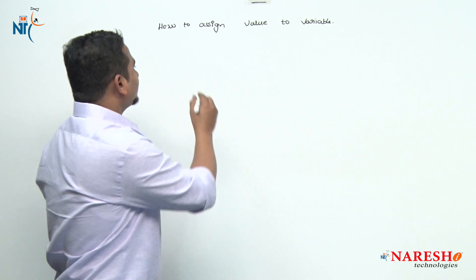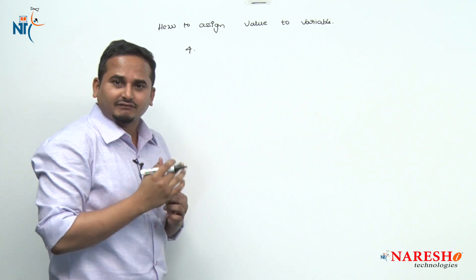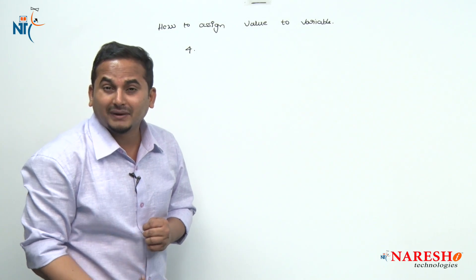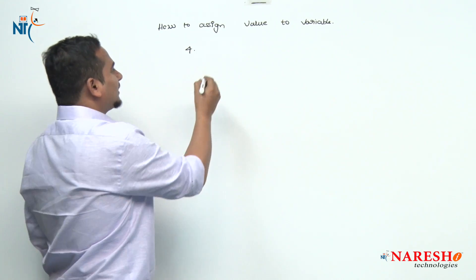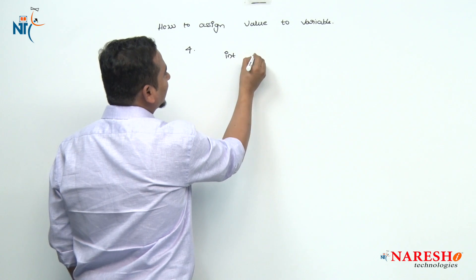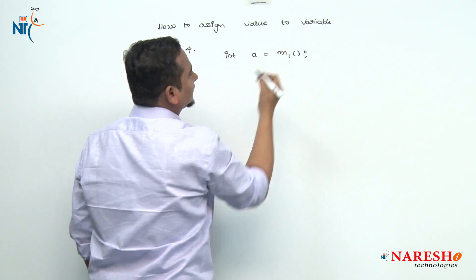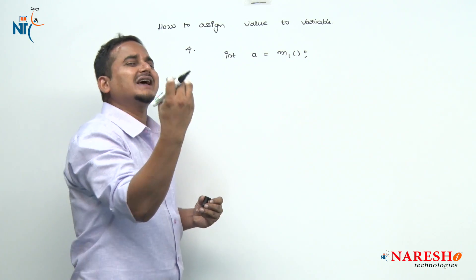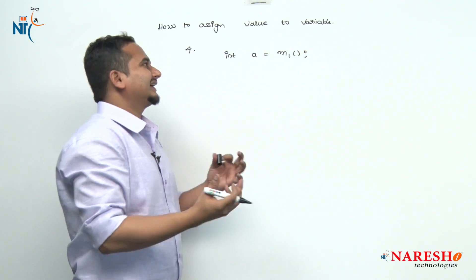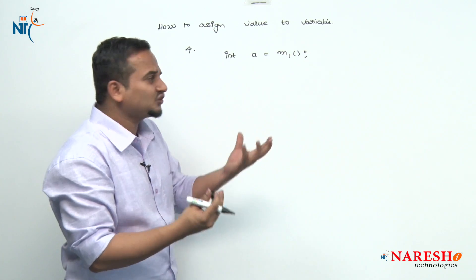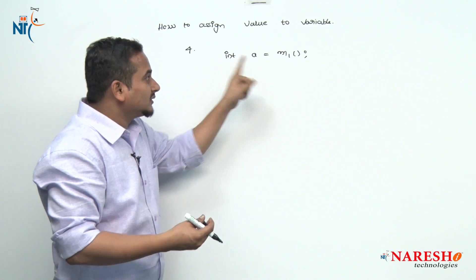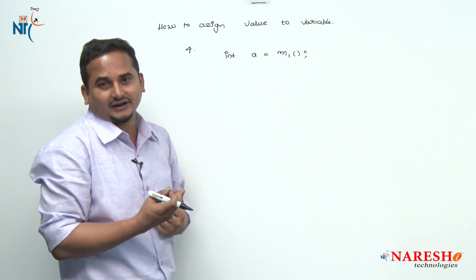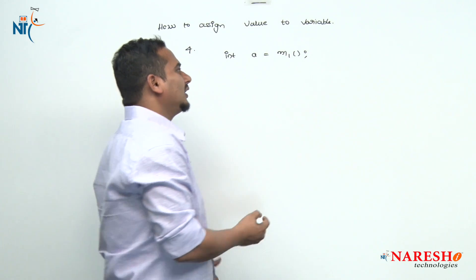The fourth one is assigning the value to a variable with the help of method return type. Here, let me write int a = m1(). The main intention of the equal operator is to assign something to a — an int value. But am I writing an int value directly? No. I am using method calling.